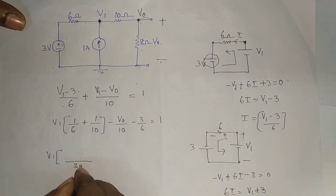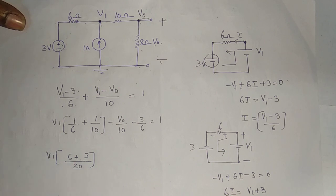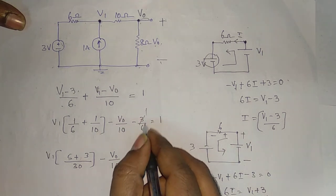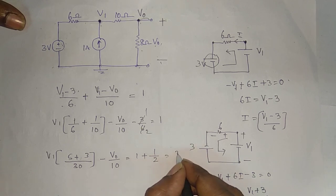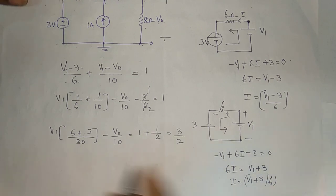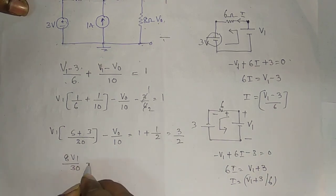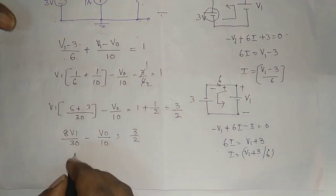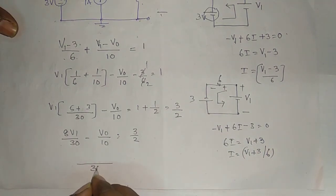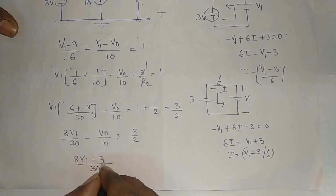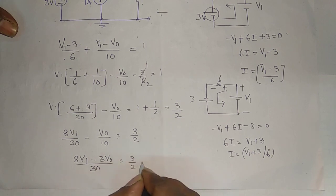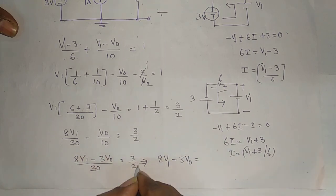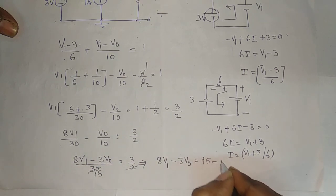Taking LCM equal to 30: V1 common gives (5 plus 3) / 30, minus V0 / 10 equals 1 plus 1/2, which is 3/2. That implies 8V1 minus 3V0 equals 45. This is the first equation.